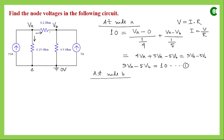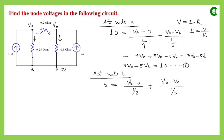Applying KCL at node B: node B has one incoming current of 5A. Assuming both outgoing currents leave node B: the current through the 0.5Ω resistor is VB / 0.5, and the current through the 0.2Ω resistor is (VB − VA) / 0.2, since VB is now at higher potential with respect to VA. So the second equation is: 5 = VB / 0.5 + (VB − VA) / 0.2. Simplifying gives our second equation.